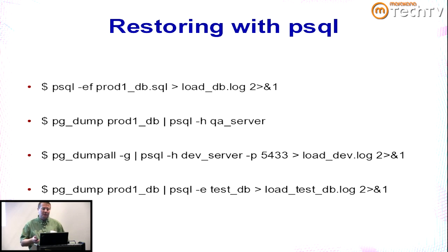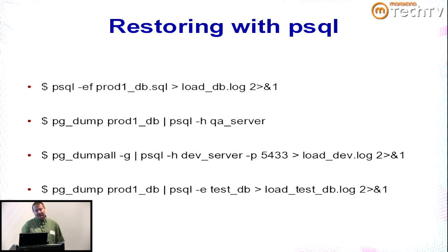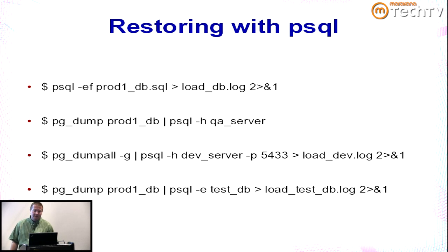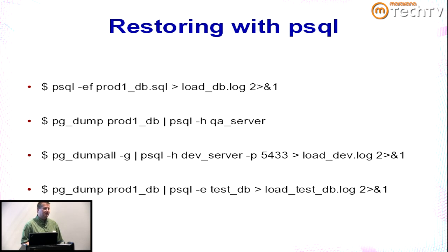Another example: dump only globals with pg_dumpall and pipe to psql -h for a dev server on a different port, logging the output. This is similar to what you'd do with Slony — do pg_dumpall -g on the master and pipe it to psql -h for the slave being set up. You can also do a pg_dump of prod1 and pipe that to psql on a test database, logging everything.